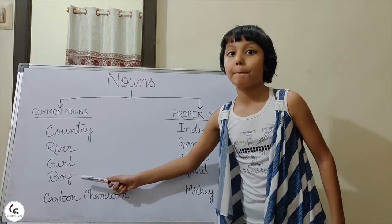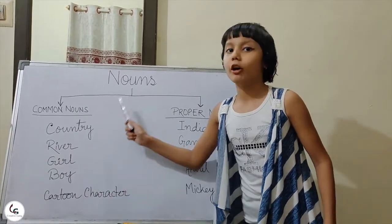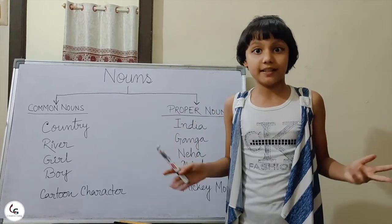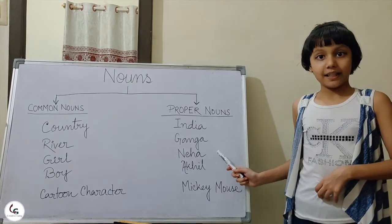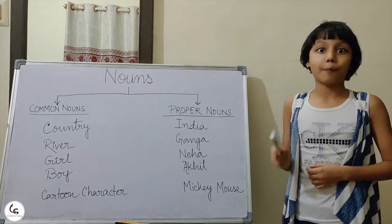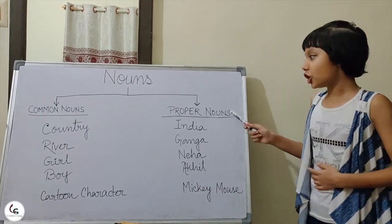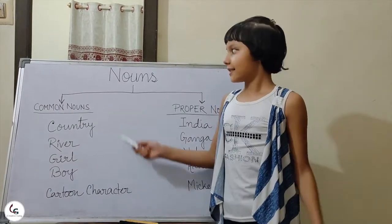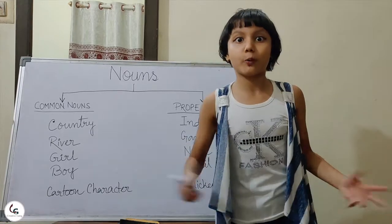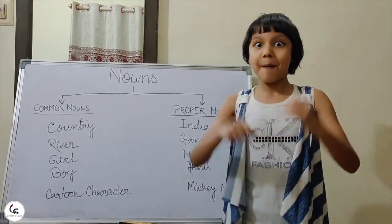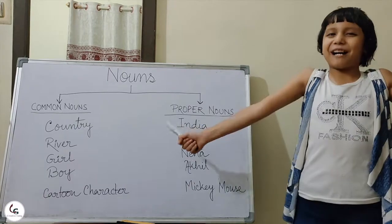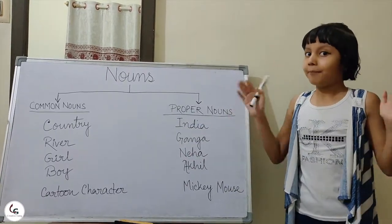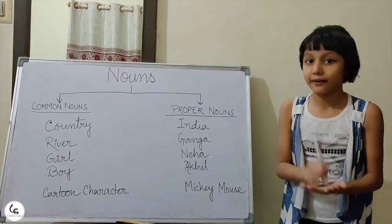'Boy' is a common noun because we don't know which boy it is. We don't know which cartoon character it is either. But our favorite Mickey Mouse is a proper noun — we know Mickey Mouse is a famous cartoon character.